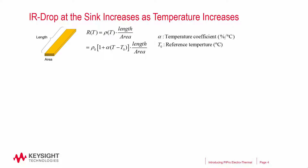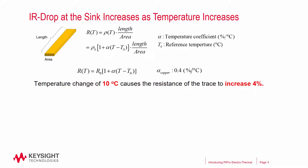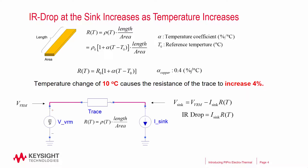Here is the new resistance equation that includes the temperature coefficient. Given a typical copper trace with the temperature coefficient 0.4% per degree Celsius, a 10 degree Celsius temperature change would increase the resistance by 4%. In the context of power distribution networks, this 4% increase in resistance shows up directly in the IR drop. Knowing the resistance is a function of temperature, we understand why we have to include thermal effects to correctly calculate the IR drop.